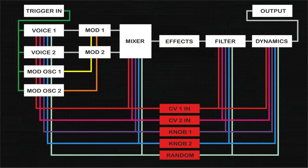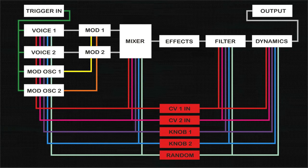The CV inputs have a usable range from 0 to 5 volts. Each CV input has a dedicated attenuator knob to scale the amplitude of the external control voltage.